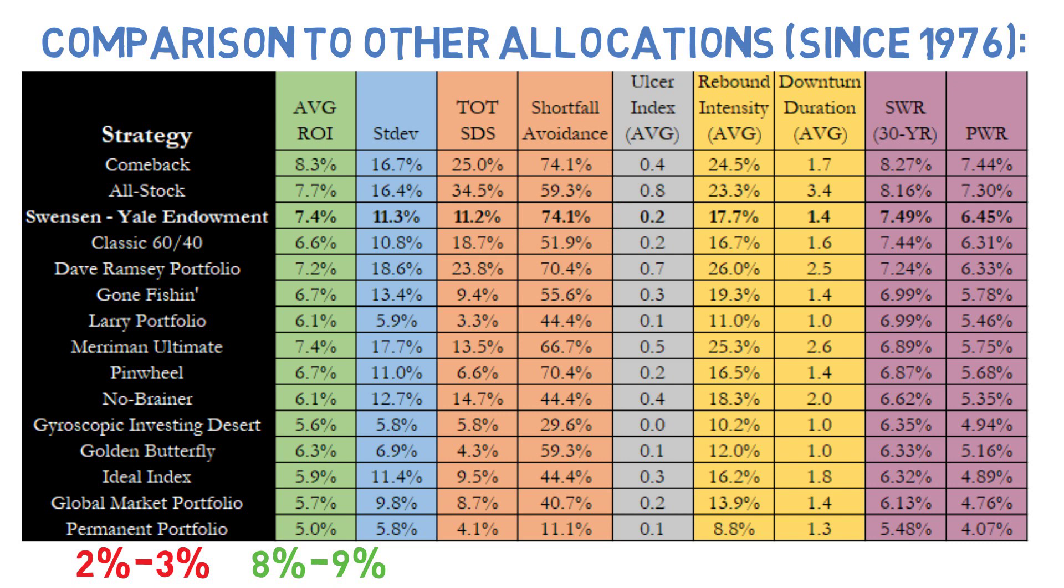Its short-term resiliency is perhaps where it struggled the most, as the rebound intensity metrics are one of the few where the Swenson portfolio came in below the average. However, it's not like that resulted in it taking forever to recover from downturns. In fact, it recovered quicker than most allocations we've covered so far, both on average and at the extremes. Because it just didn't fall by very much in the first place. And as I've already mentioned, it stacked up pretty darn well in the withdrawal metrics and was above average in income generation as well. So I think it's pretty safe to say that it has accomplished its primary goal pretty darn well.